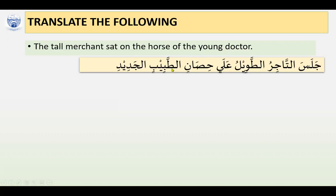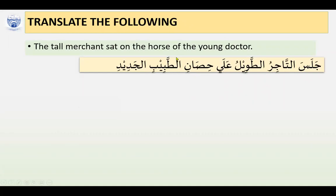Ala acts upon Hison, making it Majroor in the case of Jar. Hison is also a Mudhaf, and what comes after it is the Mudhaf Ilayhi. Nothing goes in between the Mudhaf and the Mudhaf Ilayhi. So even though in English 'young' came before 'doctor,' in Arabic adjectives go after. We have Tabibi Al-Jadidi — 'of the young doctor.'